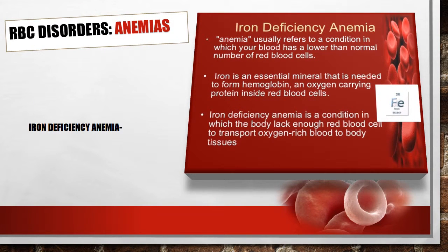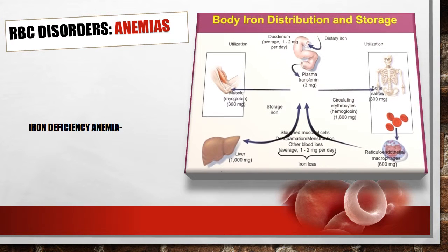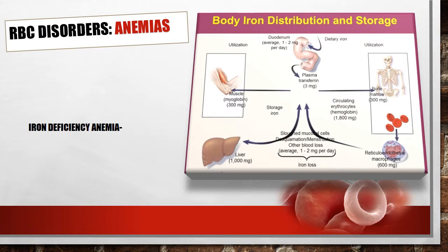The next anemias we shall discuss are caused by decreased red blood cell production that occurs in response to bone marrow failure or failure to make a substance needed for red blood cell production. The first is iron deficiency anemia. Iron is an essential mineral needed to form hemoglobin and provide oxygen-carrying capacity inside the red blood cells. Iron deficiency anemia is common and can result from blood loss, poor GI absorption of iron, or an inadequate diet.